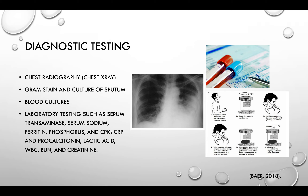Several nonspecific lab tests are often performed during the workup of community-acquired pneumonia, particularly if atypical CAP is expected. Serum transaminase, serum sodium, ferritin, phosphorus, and CPK levels may provide evidence supporting a particular pathogen such as Legionella. CRP levels and procalcitonin may help predict the likelihood of a bacterial origin for CAP. Lactic acid, white blood cell count, BUN, and creatinine may be used in categorizing the severity of illness.